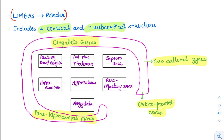Now coming to the subcortical structures, there are seven of them. These include parts of the basal ganglia, the anterior nucleus of thalamus, the septum area, the hippocampus, the hypothalamus, the para-olfactory area, and the amygdala. Even if you don't remember all of these names, we have to remember one important circuit consisting of all these structures.